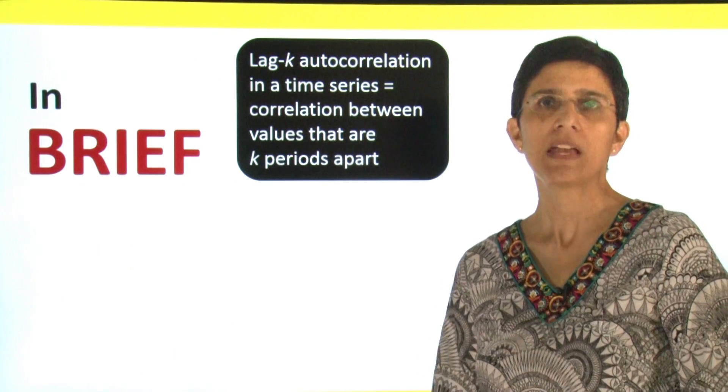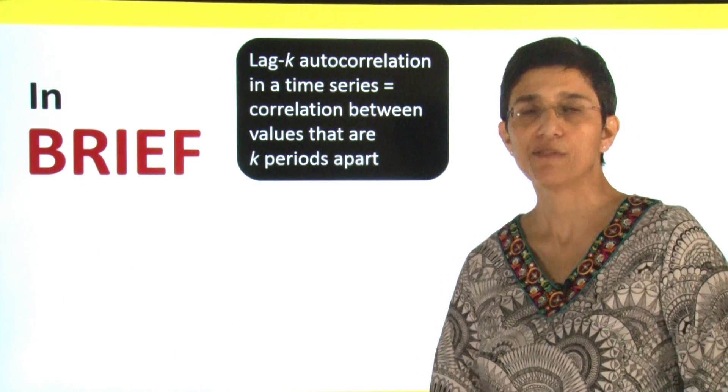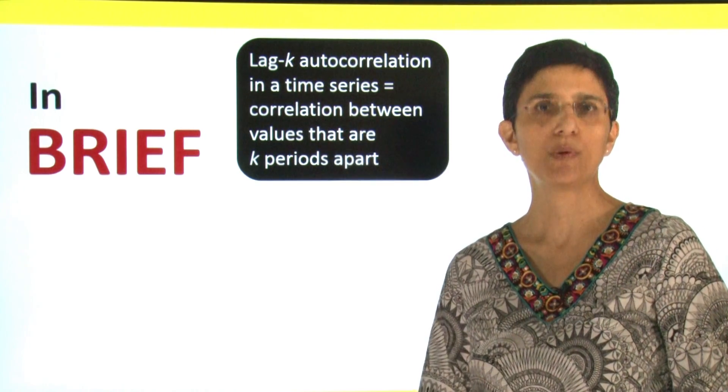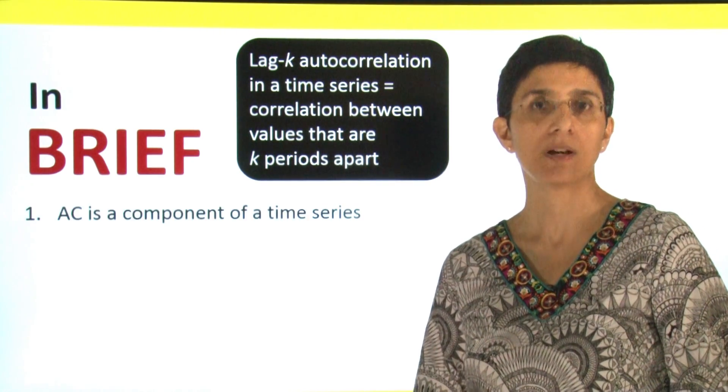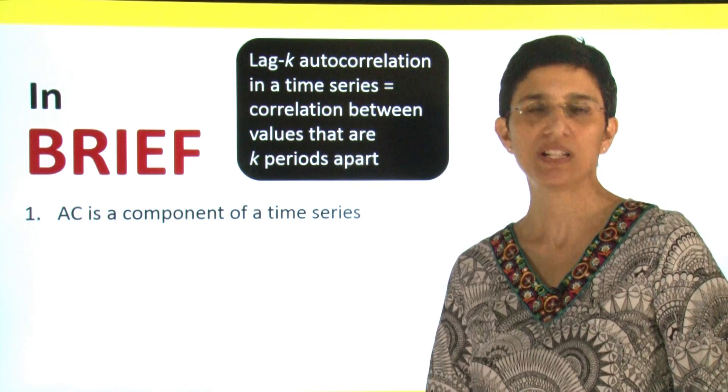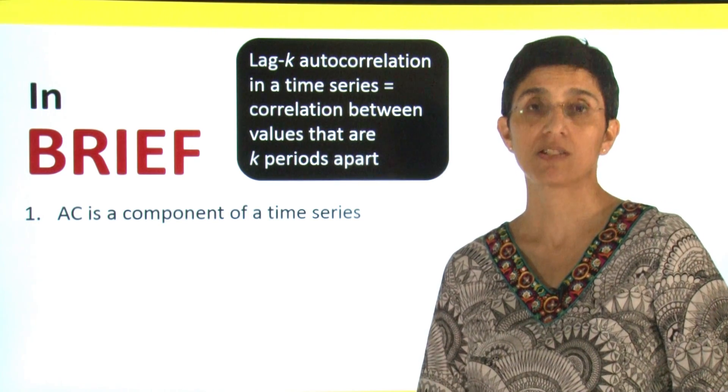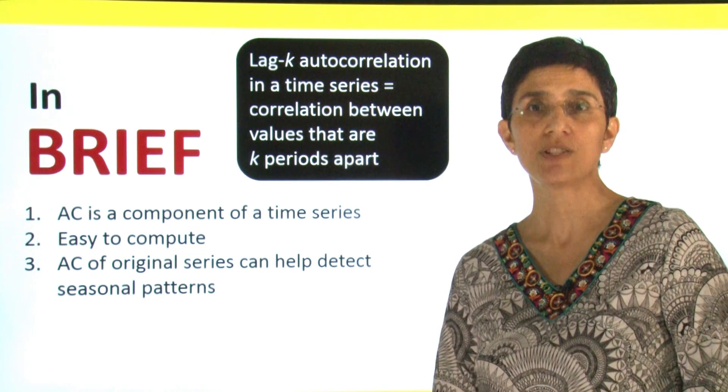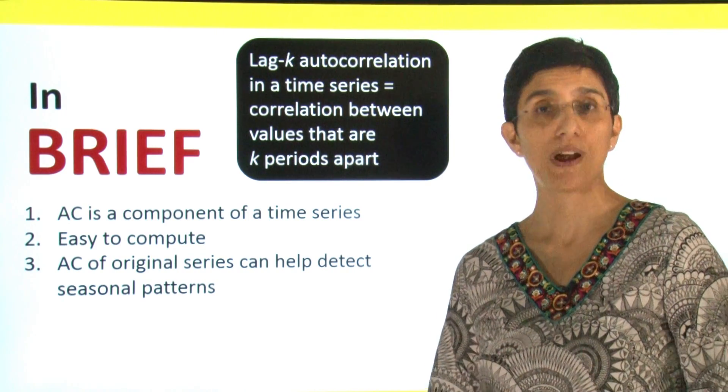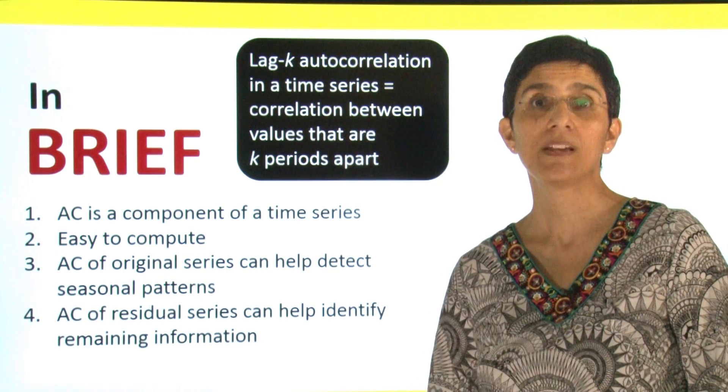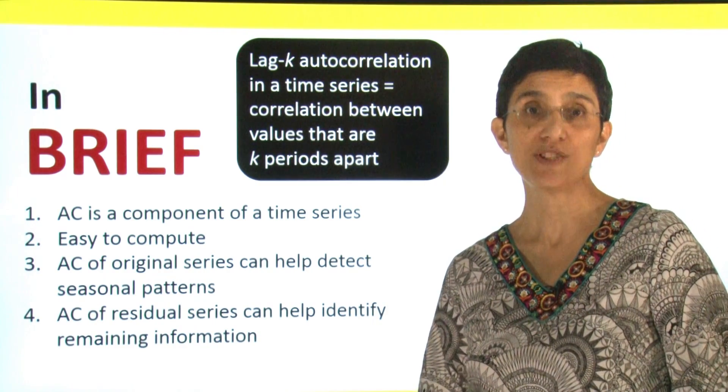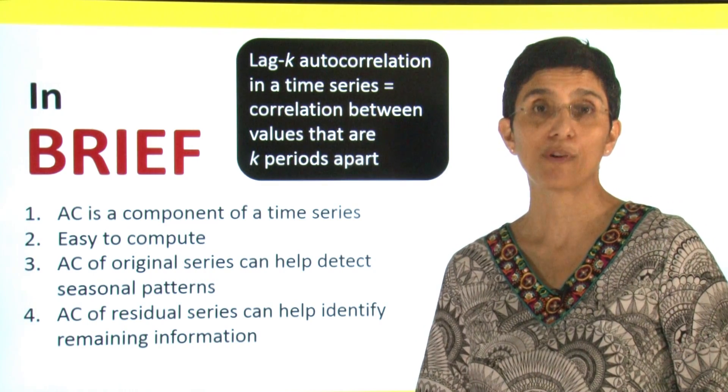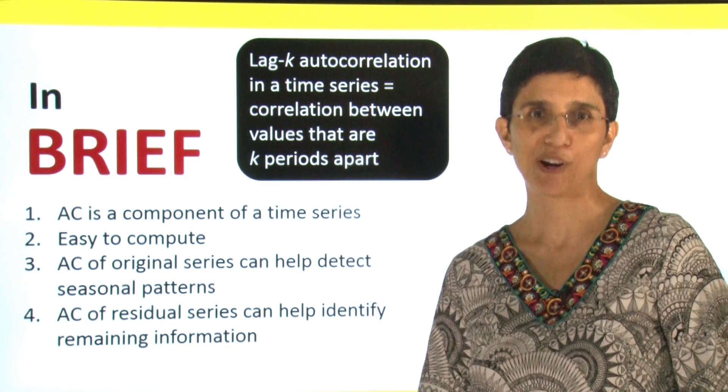In summary, lag k autocorrelation is a very useful concept in a time series. It measures the correlation between values that are k periods apart. This is another component of a time series that we haven't discussed thus far. It's easy to compute. We can look at the autocorrelation series of the original series to try and detect seasonality. Or we can apply autocorrelation functions to the residual series to see if there's any remaining information for us to use and improve our forecasts.